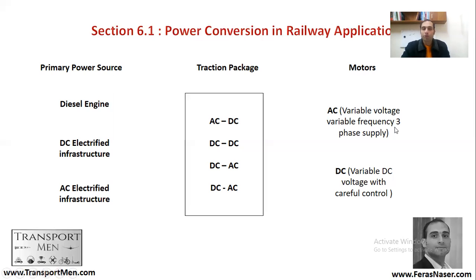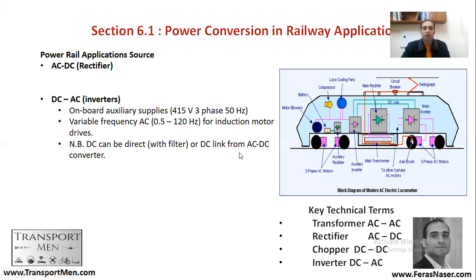Let's have a look at this picture. The pantograph feeds the train with 25,000 V AC. Following the yellow line, this goes to the transformer. From the transformer, part of it goes to the axle brush, but the portion utilized within the train goes to the rectifier. The transformer changes the voltage to a lower AC; the rectifier converts that AC to DC through a DC link, also known as a chopper.